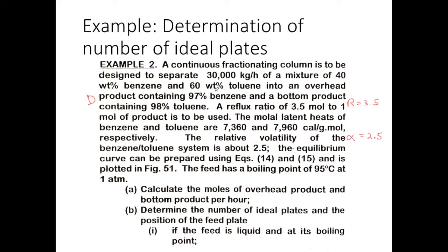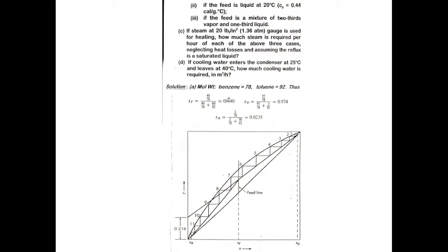From these values, we need to find XF, XD, and XB. Since the feed composition is given in weight percent, we convert to mole percent using a basis of 100 kg. For XF: 40 kg benzene divided by 78, divided by the total moles, gives XF equals 0.44. For XD: using 97 kg benzene out of 100 kg, XD equals approximately 0.974. For XB, we get 0.0235.